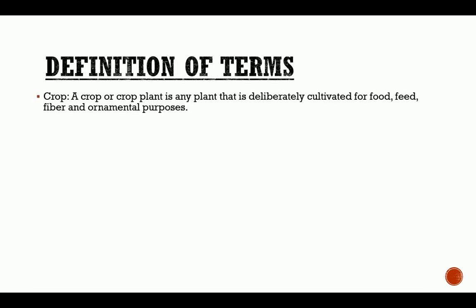What is a crop? Sometimes people confuse crop and plant. Generally, 'plant' is a general term for everything called a plant. A crop is more specific — it is a plant that is deliberately cultivated for food, feed, fiber, and ornamental purposes.